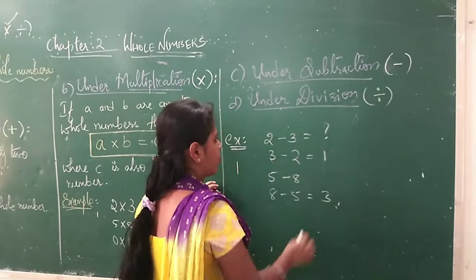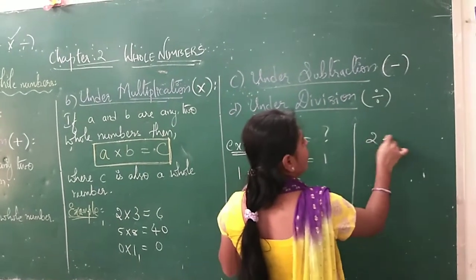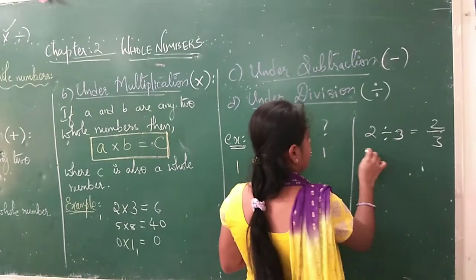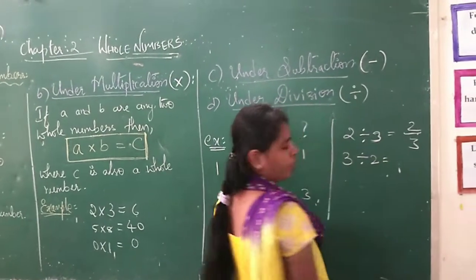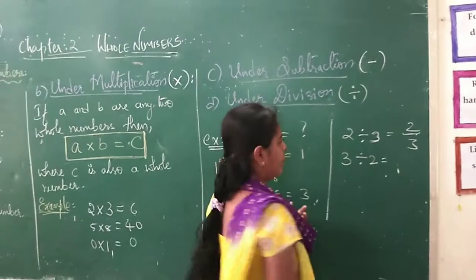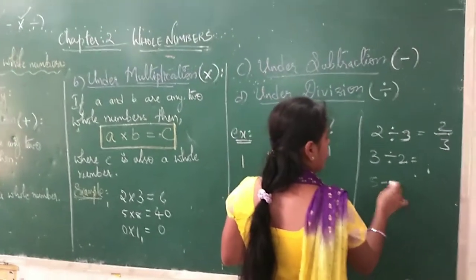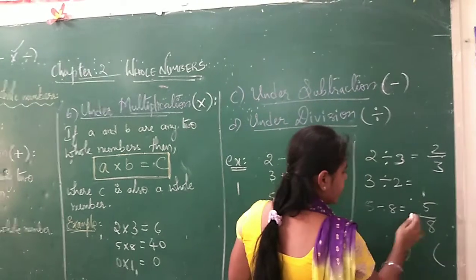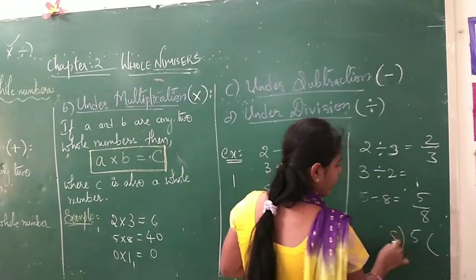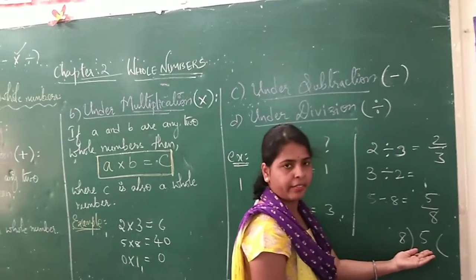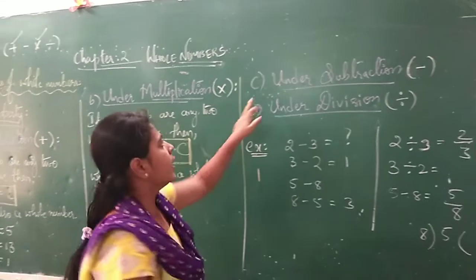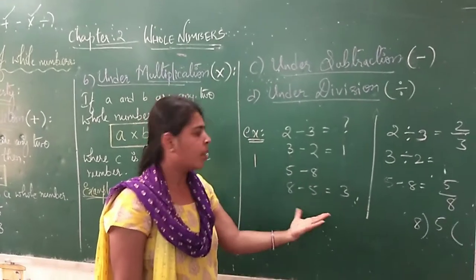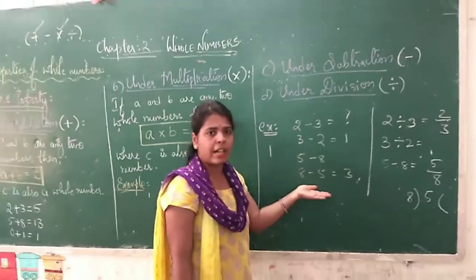The same thing applies to division. Take 2 divided by 3 — can you do this? You cannot get a whole number result. But if you take 3 divided by 2, you can do it. Similarly, 5 divided by 8 does not give a whole number. So under closure property, both subtraction and division are not satisfied — they are not holding good. Only when you have the greater value first and smaller value second would it be satisfied, but if they are interchanged, it is not satisfied.